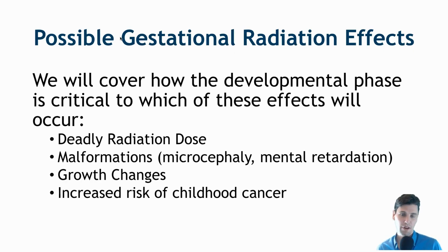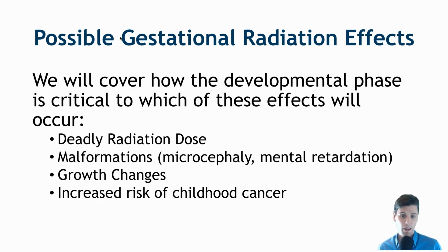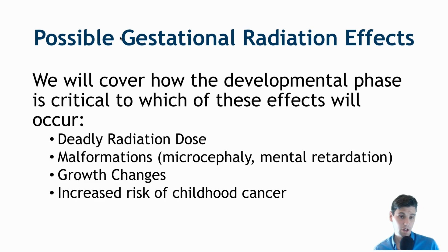The possible effects of radiation include hereditary effects, which occur if there is radiation on the sperm or on the ova before the embryo has been formed. Here we're talking about radiation after the point where the embryo has been formed up until birth — these are the gestational effects. Those effects range from mortality through malformations such as microcephaly and mental retardation, as well as growth changes and an increased risk of cancer.